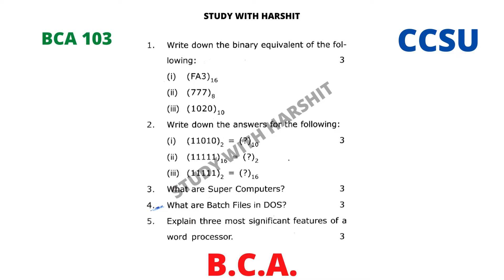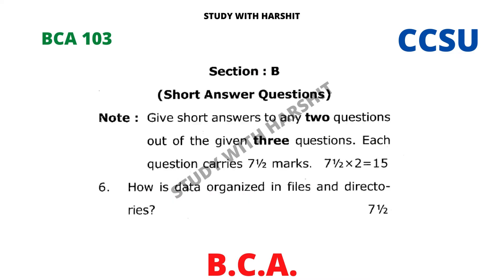Question five: explain the three most significant features of a word processor. Section B: give short answers to any two questions out of the given three questions, each question carries 7.5 marks.